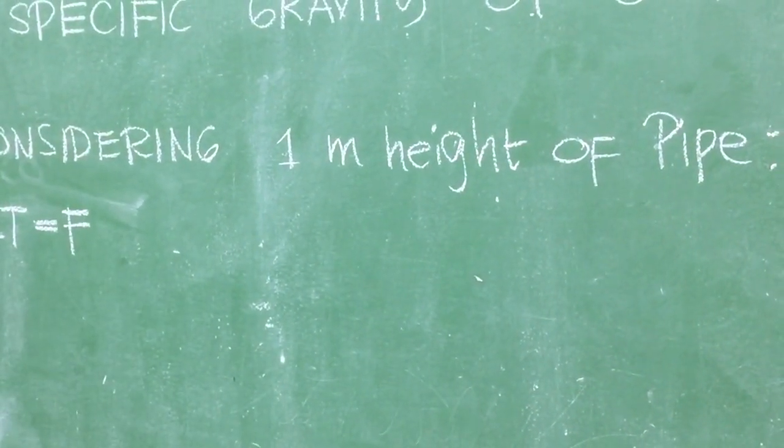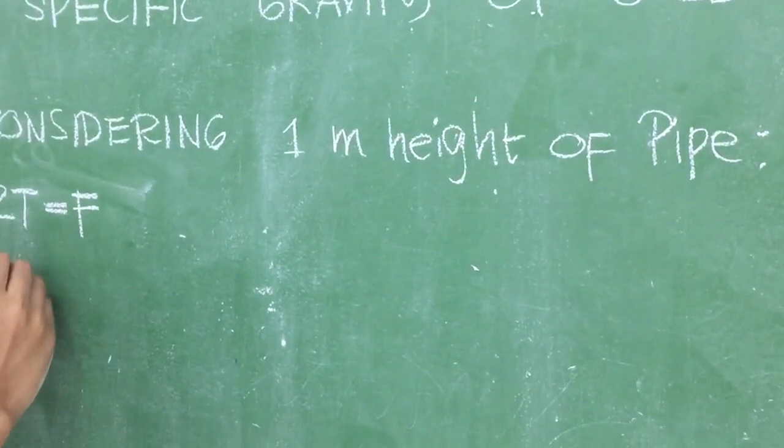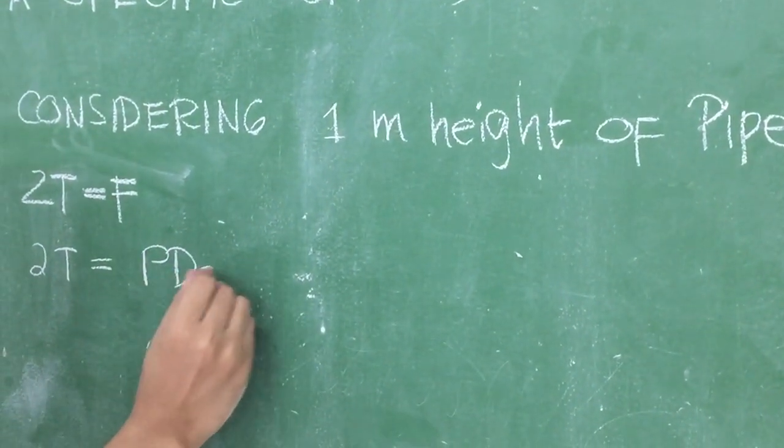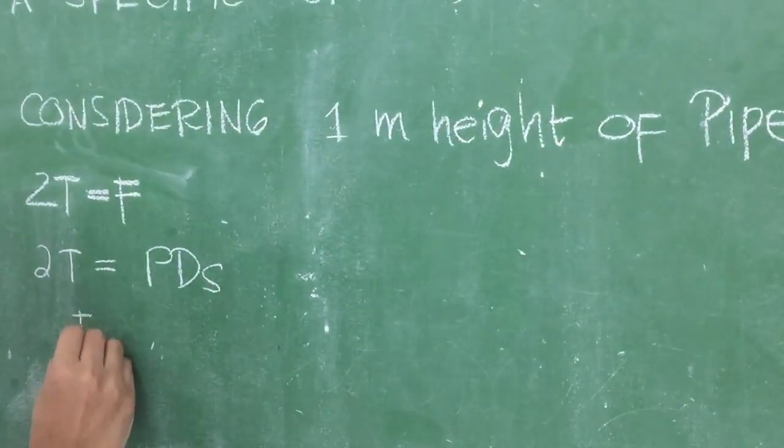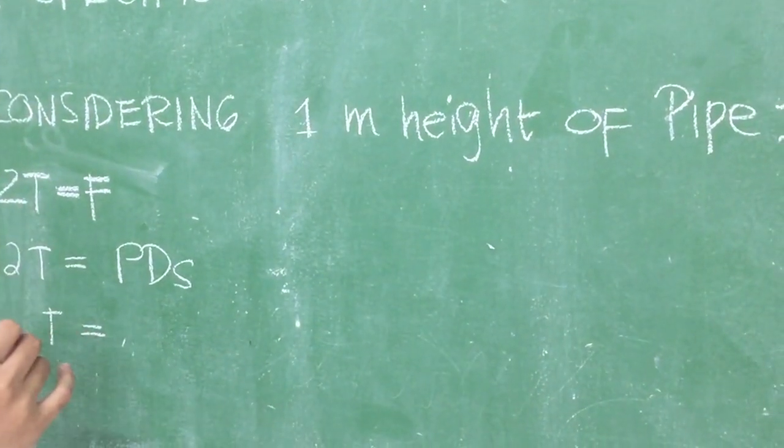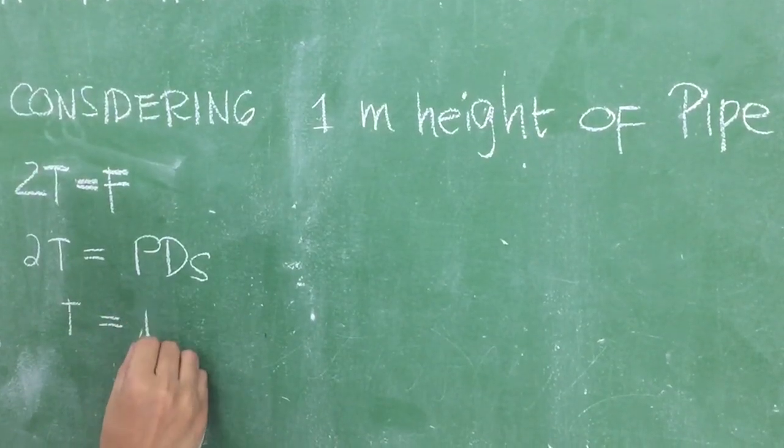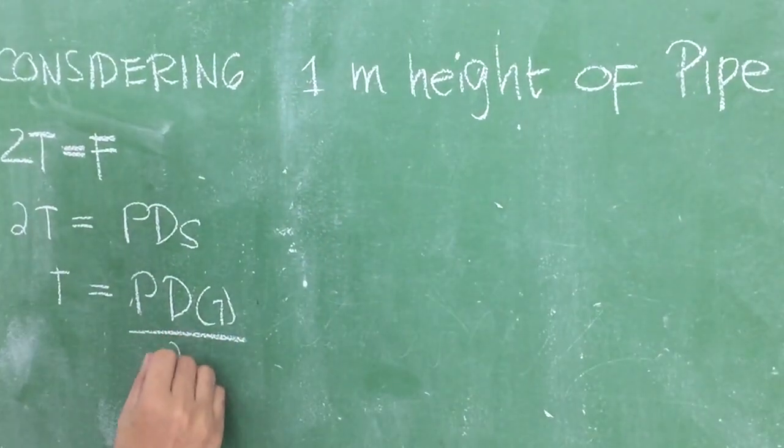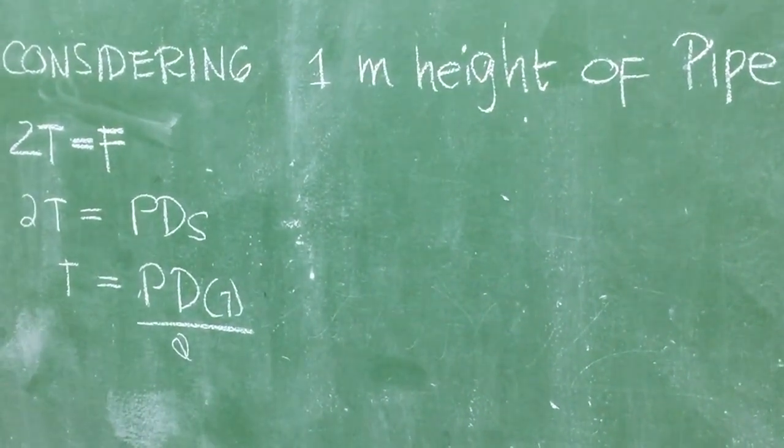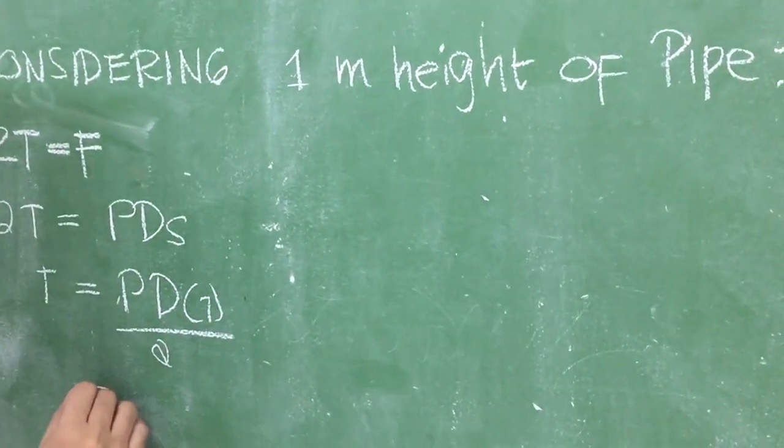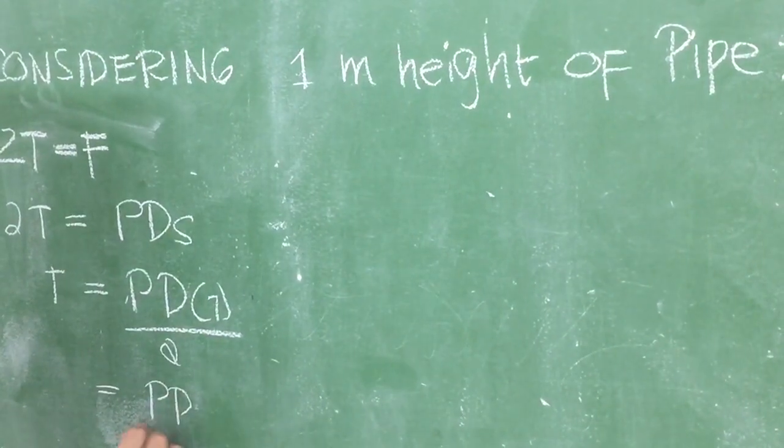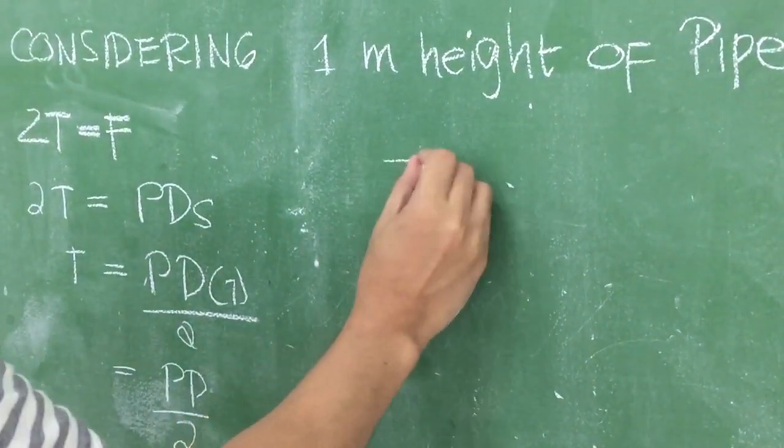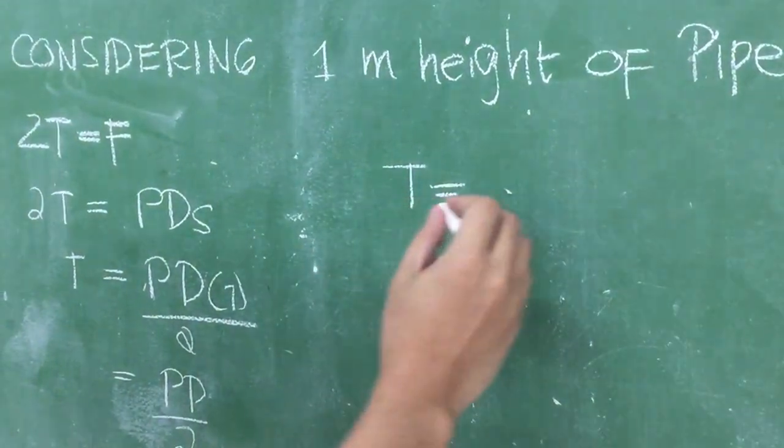We know that our working formula is 2T equals force. We have 2T equals stress times thickness times area. T equals stress times thickness times the assumed height of 1 meter, divided by 2.